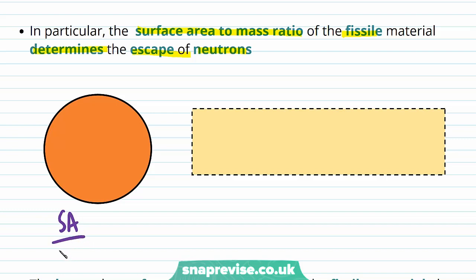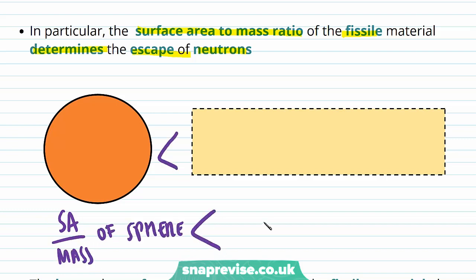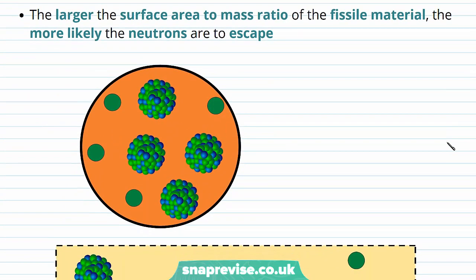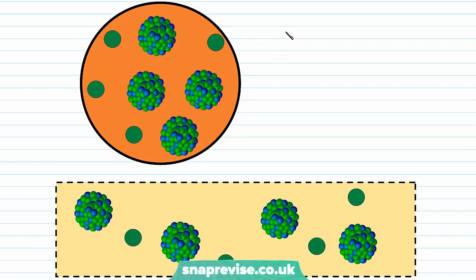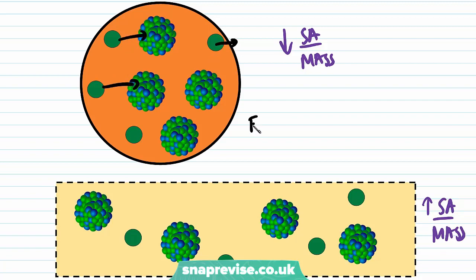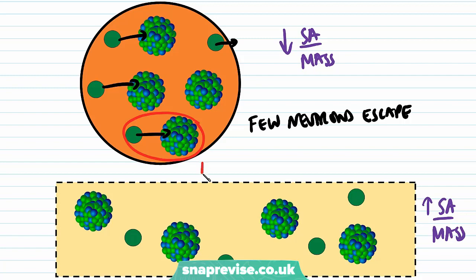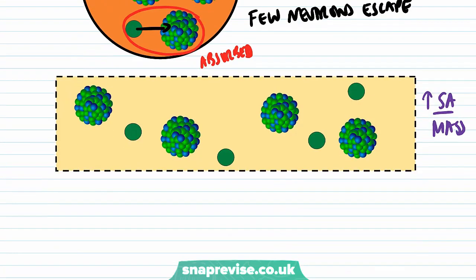For example, the surface area divided by mass of a sphere is less than that of a rectangular strip. The larger the surface area to mass ratio of the fissile material, the more likely neutrons are to escape. The sphere has a low surface area to mass ratio, so few neutrons escape — they are generally absorbed by other nuclei and go on to cause fission. However, the rectangular strip has a higher surface area to mass ratio, so more neutrons escape than are absorbed.